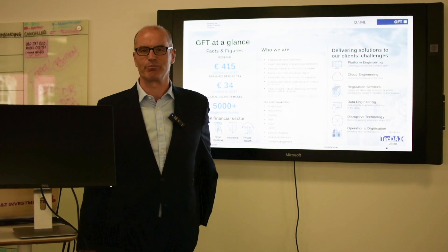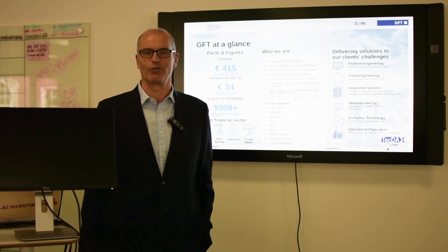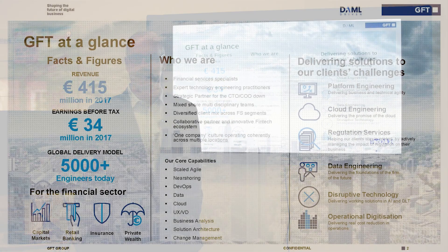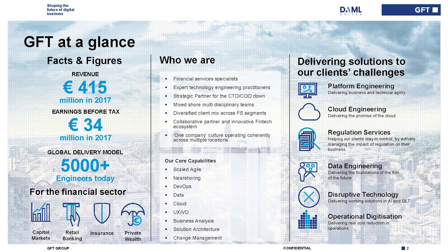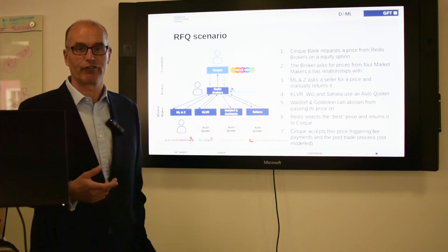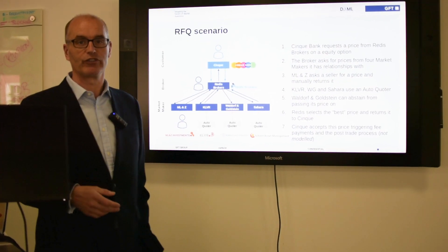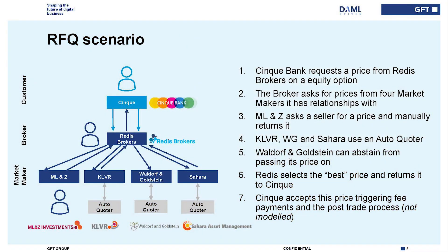So typically we're about a 5,000-person-plus organisation across 11 countries, about 400 million euros revenue a year, just to give you a flavour of who we are. And what we're going to do today is we're going to look at a particular scenario: the request for quotes scenario. And it's a relatively simple one, but we think it highlights the special functionality of a DLT.